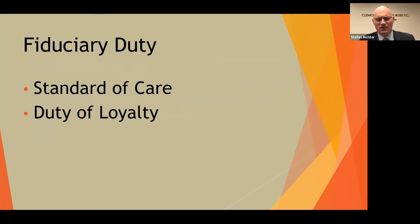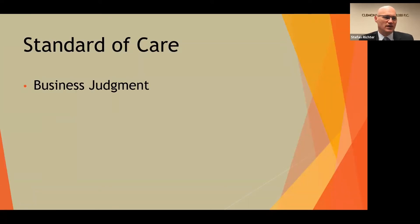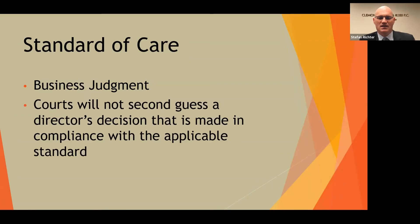What is the standard of care? The standard of care for associations and board members is something we talk about under the business judgment rule. The business judgment rule is a derivative of a corporate legal doctrine which, in layman's terms, means that a court will not second-guess a board of directors' decision that is made in compliance with the standard.